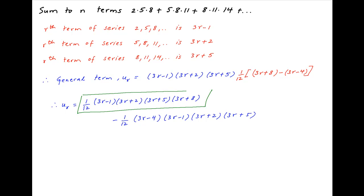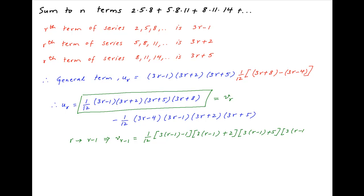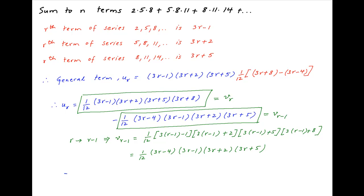Let's denote the first term by vr. Replacing r with r minus 1, vr minus 1 is equal to 1 upon 12 times (3r minus 4)(3r minus 1)(3r plus 2)(3r plus 5). Notice that this is the second term in the expression for ur obtained above. Therefore, ur can be expressed as vr minus vr minus 1.